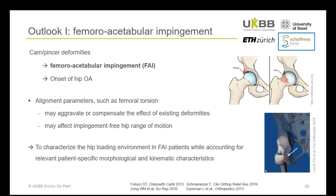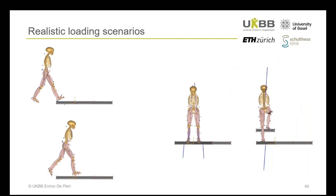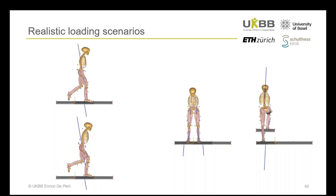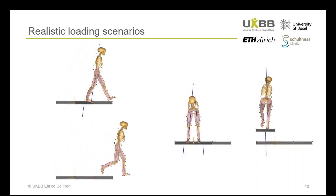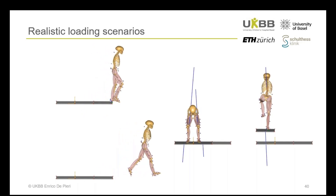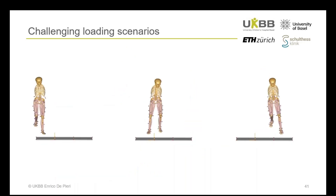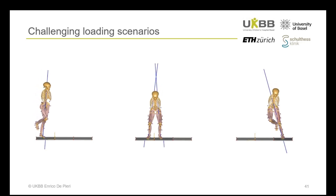Collaborators at the Schulthess Clinic are currently planning to further analyze hip loads in patients with femoroacetabular impingement syndrome, accounting for all relevant morphological and kinematic characteristics. In addition to normal gait, the analysis will be extended to a range of activities of daily living such as running, sitting down on a chair, and climbing stairs, as well as more challenging tasks such as pivot turns, drop jumps, and lateral side hops, which may better differentiate normal and pathological hip mechanics.